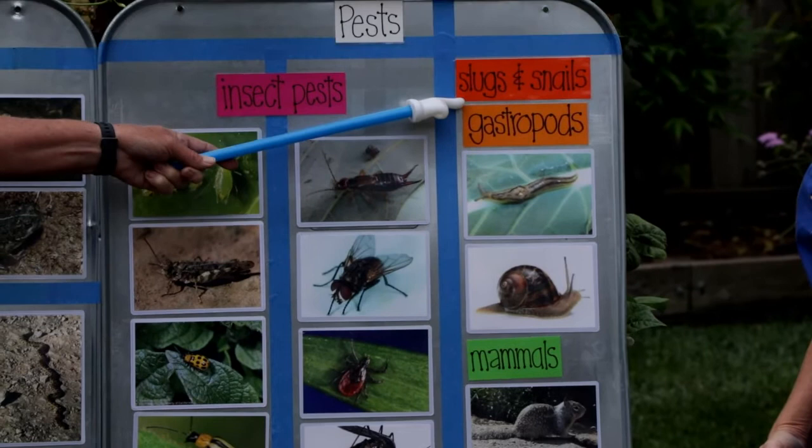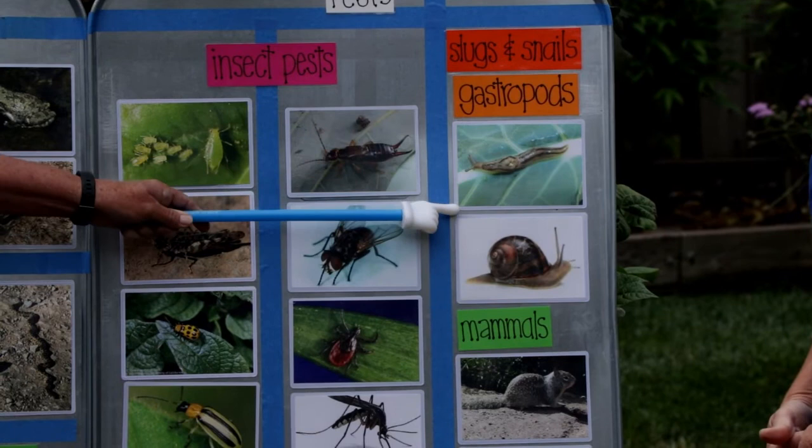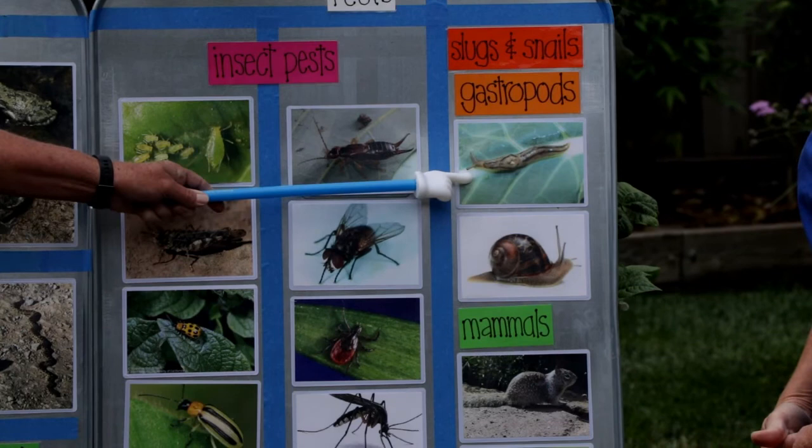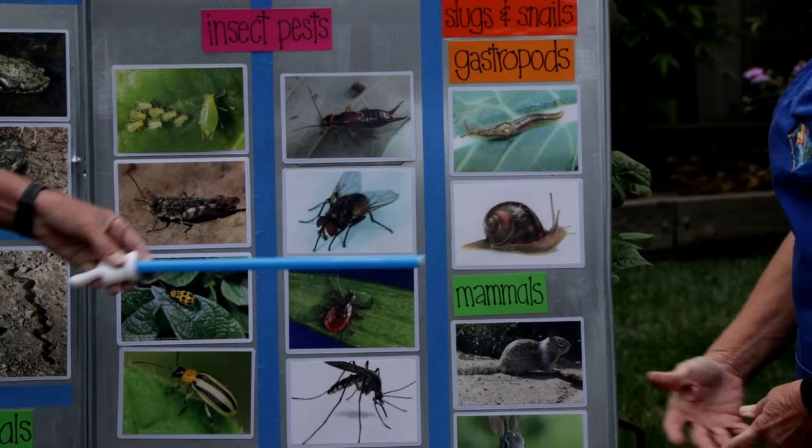The next category of pests are slugs and snails — the fancy word is gastropods. Mostly they come out when it's moist, in the evening and nighttime hours. Those are things you can go out and remove from your garden or trap. A slug is a critter without a shell, and a snail carries a shell with it.